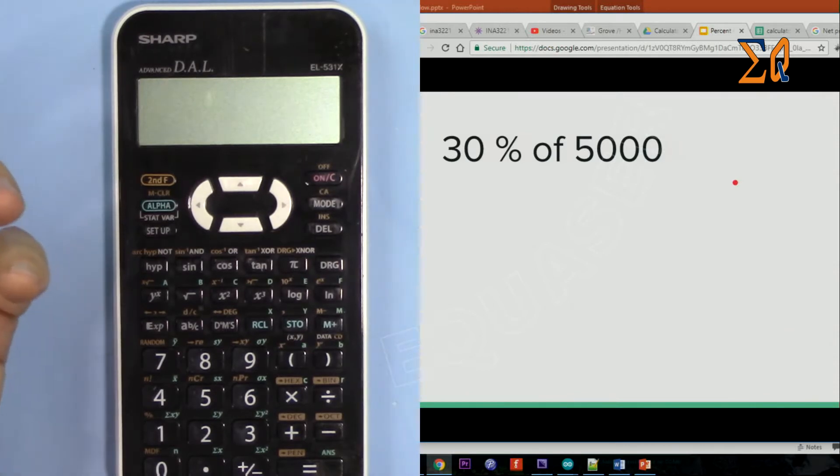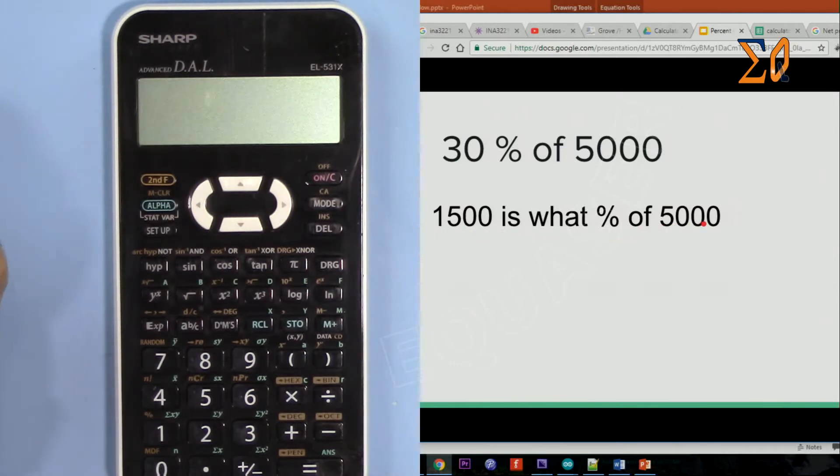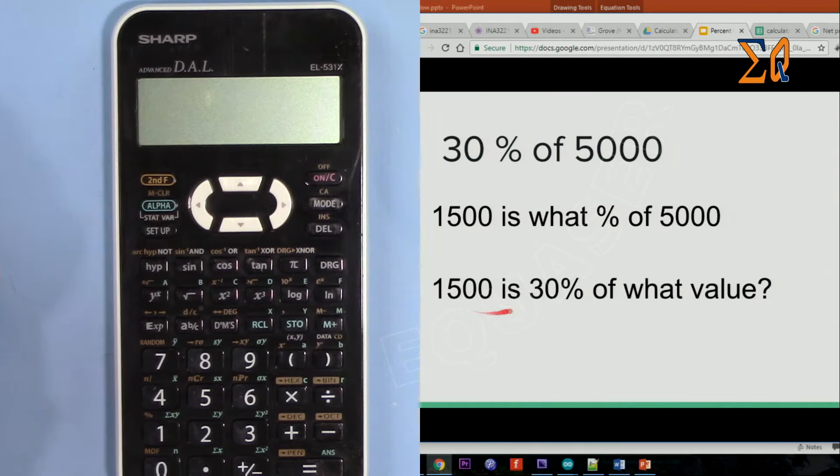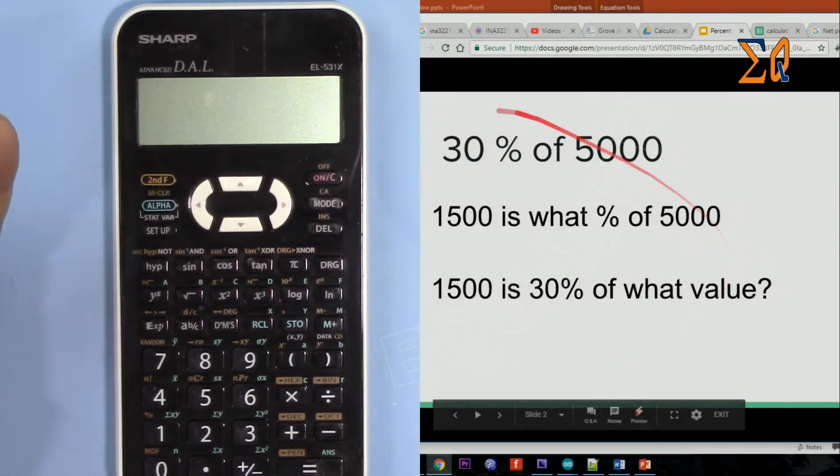The three ways are: first, 30% of 5000 is what? Second, 1500 is what percent of 5000? And third, 1500 is 30% of what value? These are the three ways.